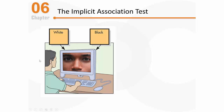In the first step, people are shown pictures of faces. They use their left hand to click a button for white faces and their right hand for black faces. So when a black face appears, the person responds as quickly as they can by pushing down the button with their right hand.